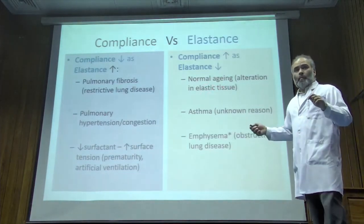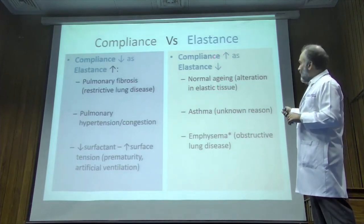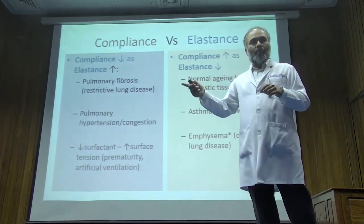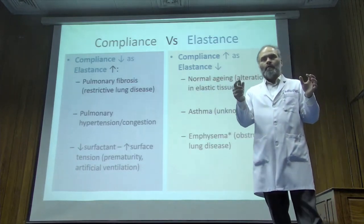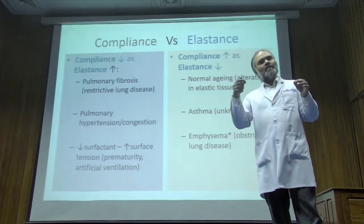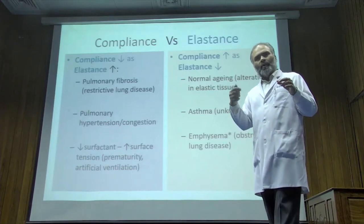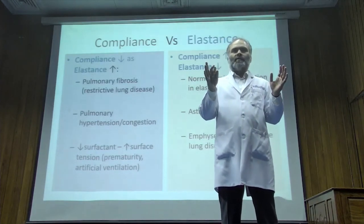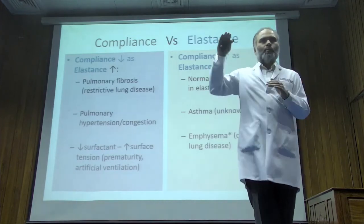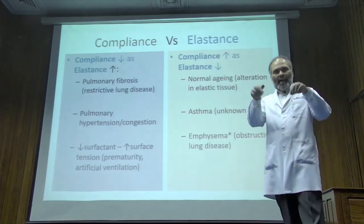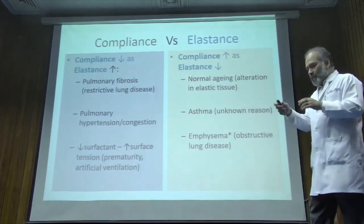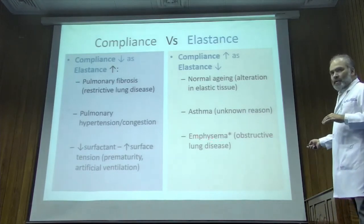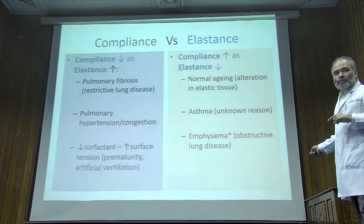With aging, compliance increases and elastance decreases. Like the old sock example — with age, the elastic fibers become lax, not as taut as in a young lung. The aging lung becomes more pliable and easy to distend, but difficult to contract relatively speaking — not COPD level, but still the phenomenon occurs because of those laxed fibers. For asthma, for some reason compliance increases and elastance decreases as well.